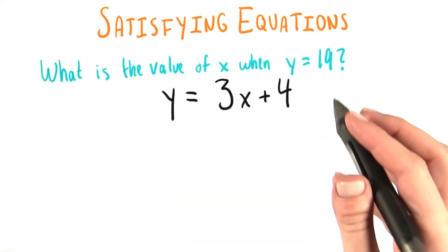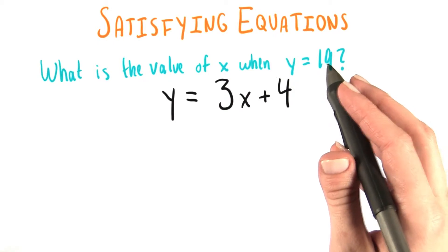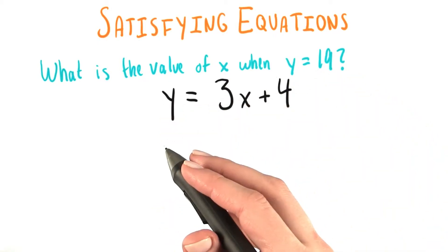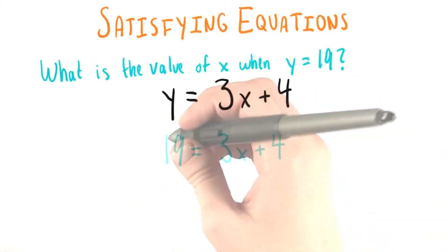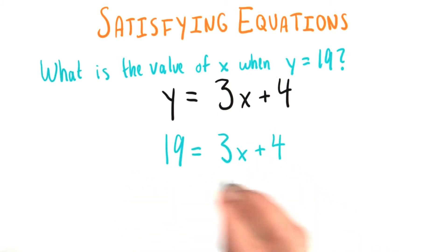Well, we know on one hand that we can just use substitution to replace y here with 19 and end up with the equation that we saw before. Then we could isolate x and have an answer for it.